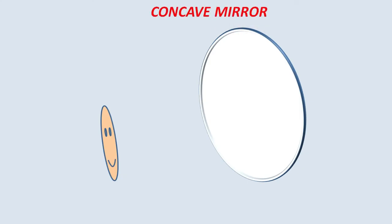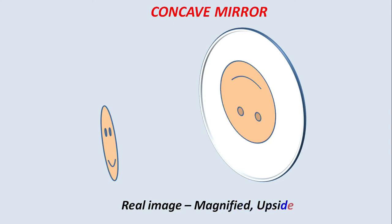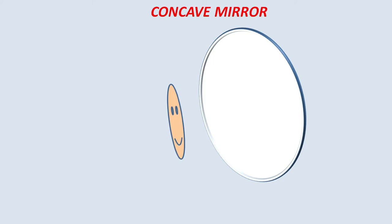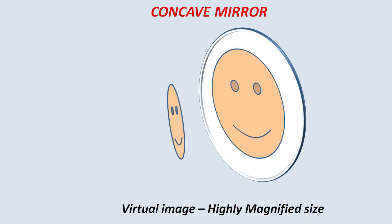Now let us move to the most peculiar one — the concave mirror. If the person is standing a bit away from the mirror, the image appearing will be upside down — inverted and a bit magnified. But if the person starts moving towards the mirror, the image becomes magnified, not inverted, not upside down — it is straight but a large magnified image. This is a virtual image of highly magnified size.